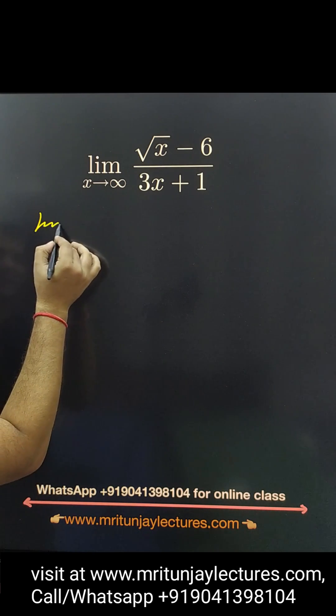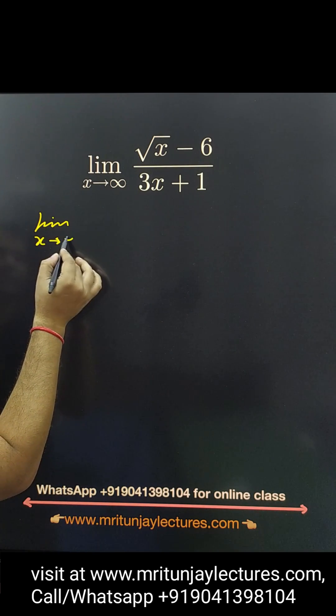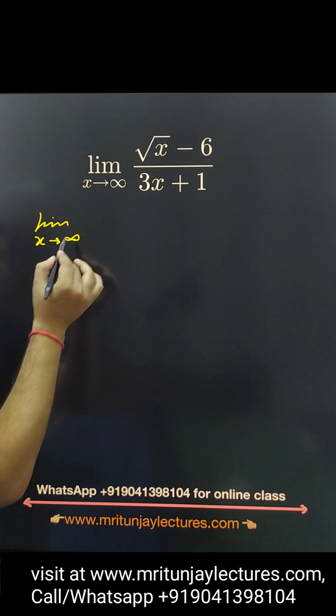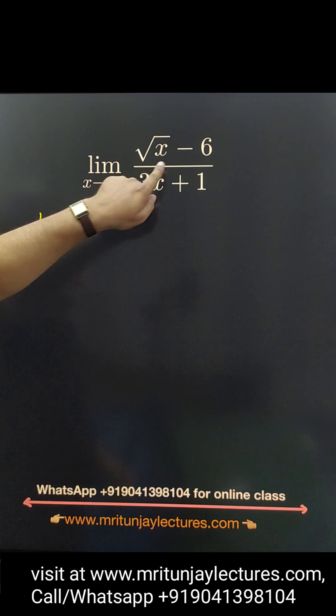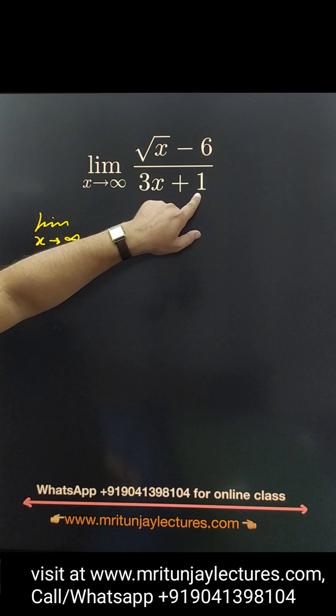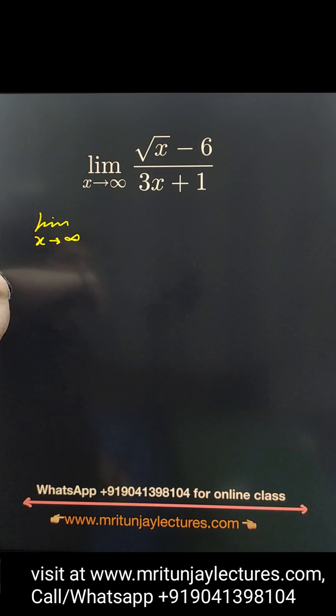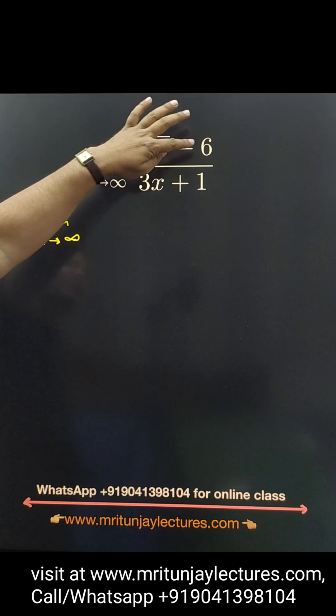Now question of the day: limit x tends to infinity, root x minus 6 divided by 3x plus 1. How can we solve this type of problem? If x is equal to infinity, then infinity minus 6.